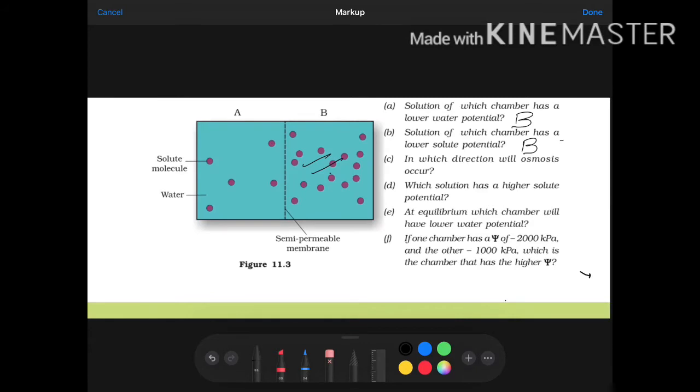In which direction will osmosis occur? Osmosis, where will it be? Low solute to high solute. High solvent here, low solvent here. So we will say that movement will be from A to B.